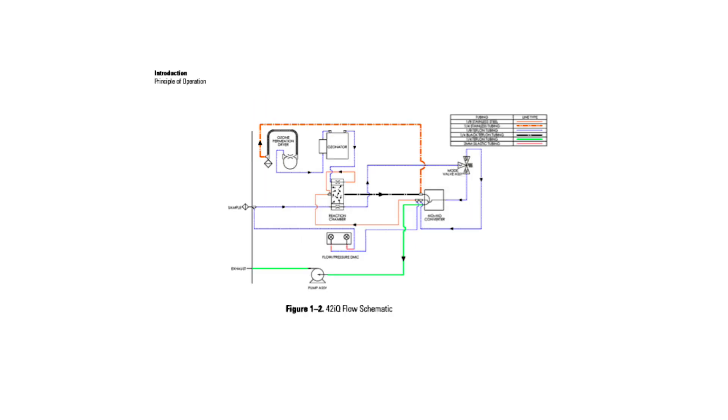As you can see in the flow schematic provided from Chapter 1 in the manual, the pump is drawing on the reaction chamber and pulling through two capillaries. One capillary is pulling clean air through the ozonator assembly, and the other is pulling the sample. We will cover how to inspect and replace those capillaries later in this video.